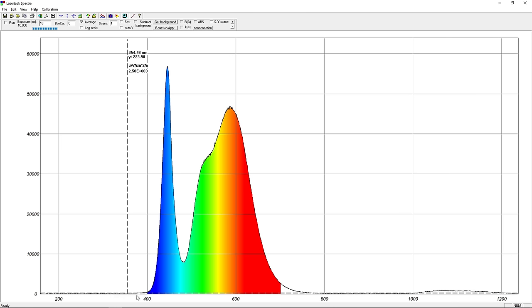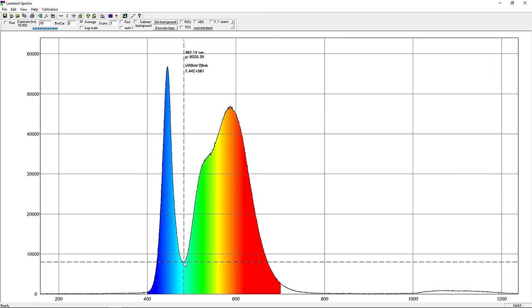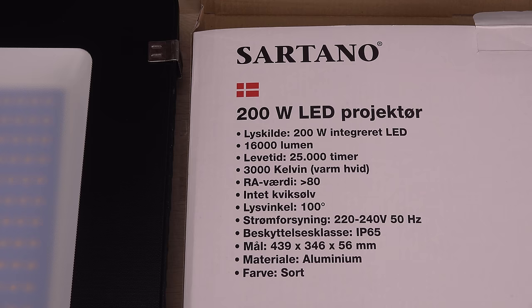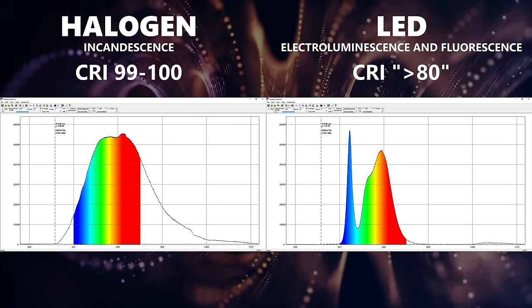The spectrum is however not the best I have seen. It is a good thing that there's basically no ultraviolet, but the valley in output around cyan and green is deep. This light is not suitable for color critical work. Halogen clearly wins in this respect.